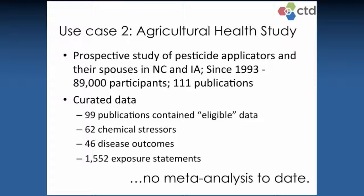We wondered what we could actually do with the information we had curated at this initial stage. Among the 111 publications, 99 contained eligible data — eligible meaning it had to have some measurable chemical and specific chemicals or diseases implicated. These 99 publications had 62 chemical stressors, 46 disease outcomes, and these exposure statements — things akin to the measurements I showed you on an earlier page. We took those data and asked what the Ag Health Study actually looks like from a thousand-foot view.